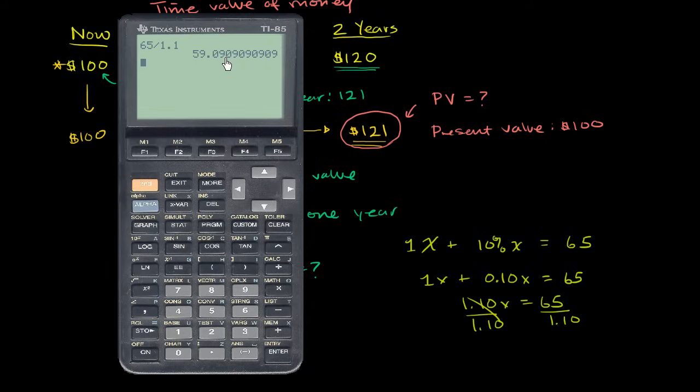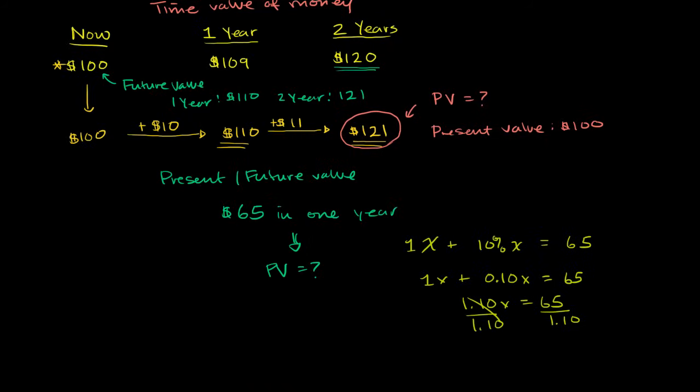$59.09, rounding it. So x is equal to $59.09, which was the present value of $65 in one year. Or another way to think about it is, if you wanted to know what the future value of $59.09 is in one year, assuming that 10% interest, you would get $65.